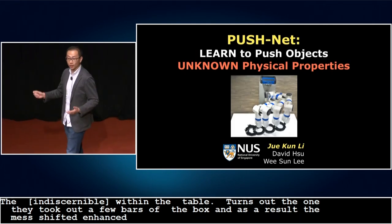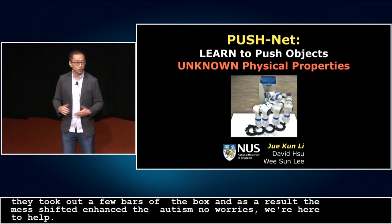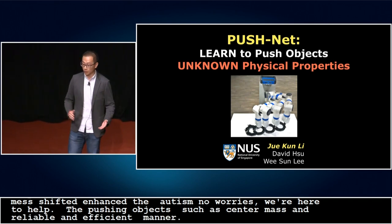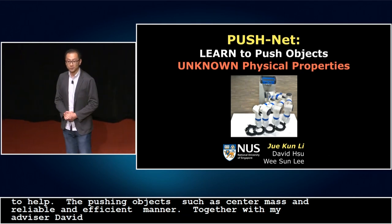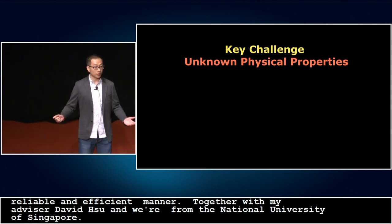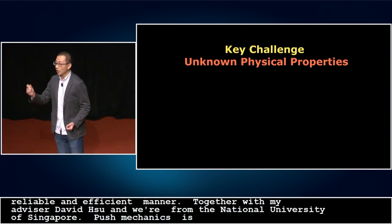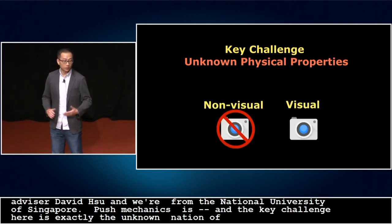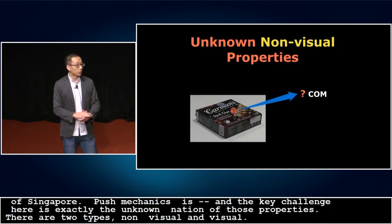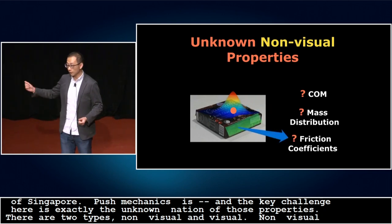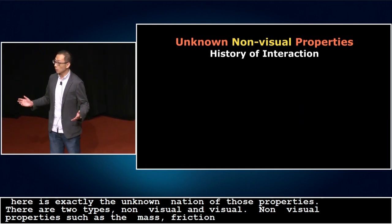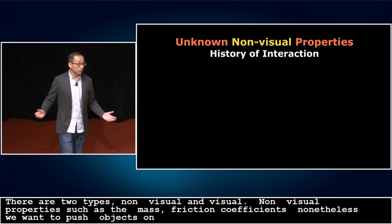In this work, we propose PushNet, which learns to push objects with unknown physical properties such as shape and center of mass in a reliable and efficient manner. I'm Jukun, together with my advisor David Hsu and Wee Sun Lee from the National University of Singapore. Push mechanics is largely governed by the physical properties of objects, and the key challenge is the unknown nature of those properties. Non-visual physical properties are not directly observable, such as the center of mass, mass distribution, and friction coefficient. Nevertheless, we are able to push objects reliably on a daily basis largely due to our ability to estimate those properties through a history of interaction.